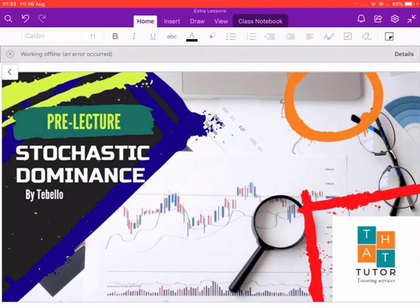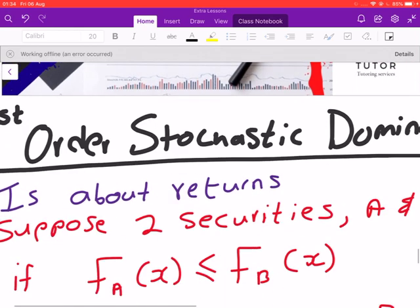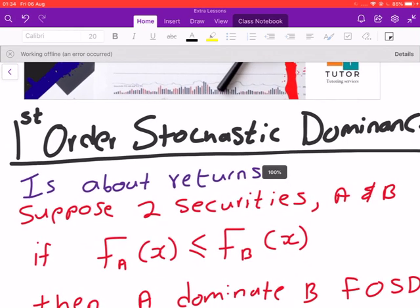Right now we are going to discuss stochastic dominance. There are three types of stochastic dominance. We are actually going to focus on the first two: first-order stochastic dominance and second-order stochastic dominance.